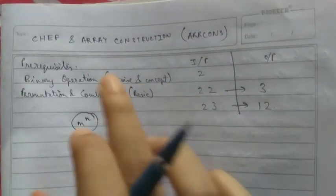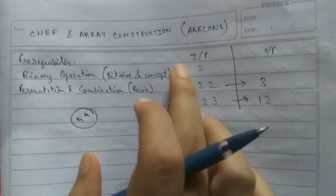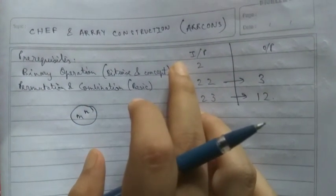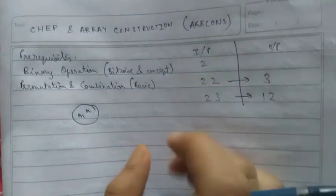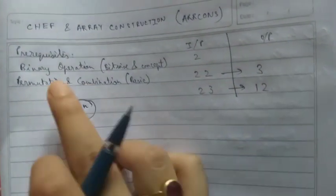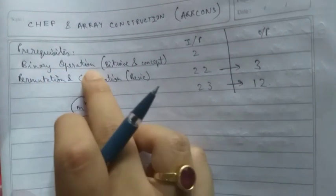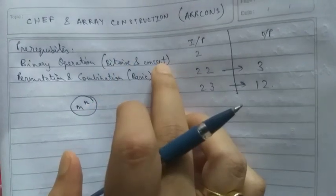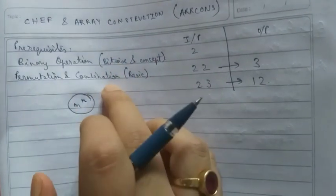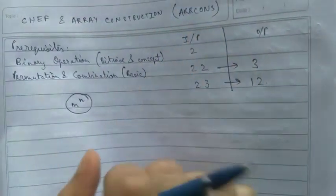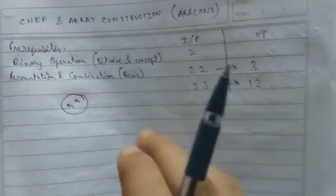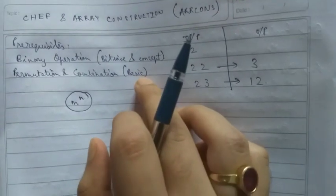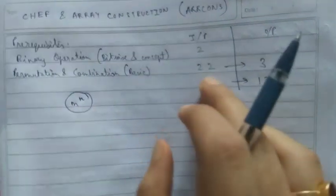In this video I will be discussing the Chef and Array construction problem from the October Long 2022 challenge of CodeChef. The prerequisites for this problem are bitwise AND concept, and permutation and combination — a very basic concept from class 12.